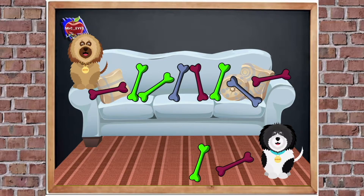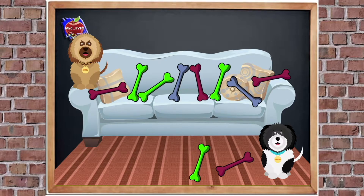How many bones are there altogether? Can you remember what altogether means? Yeah, we need to count both groups. Do you know, I'm going to stop you because you don't need to start counting from one. How many bones were there on the sofa? Yeah, there were eight. So do you think we could count on from eight? Yeah, come on then. So we've got eight, nine, ten. So there are ten bones altogether.